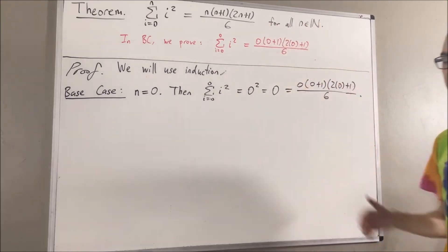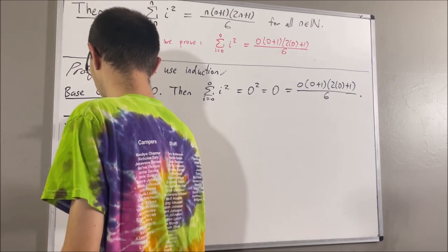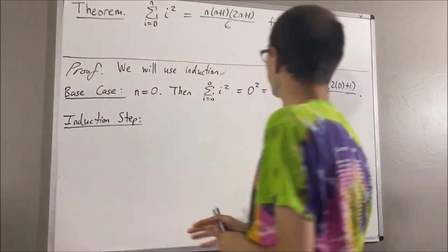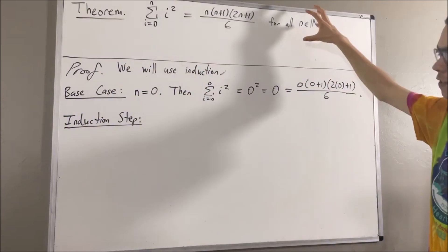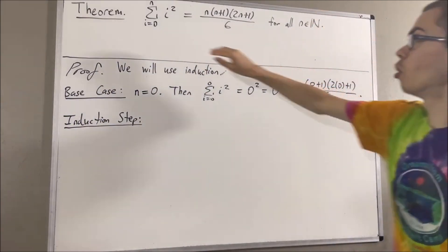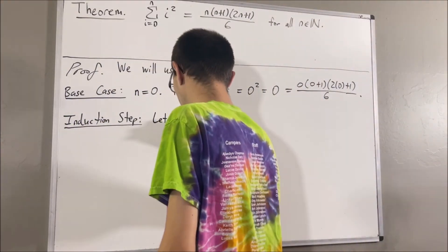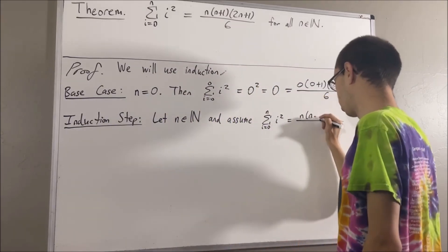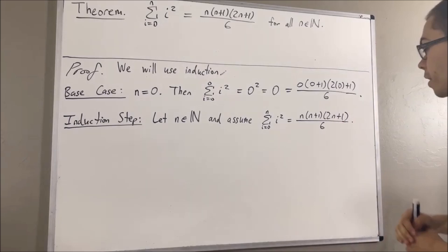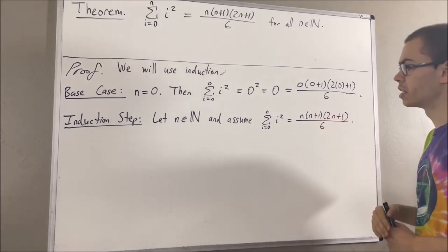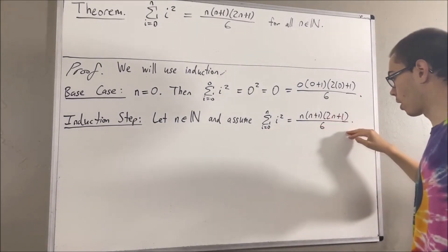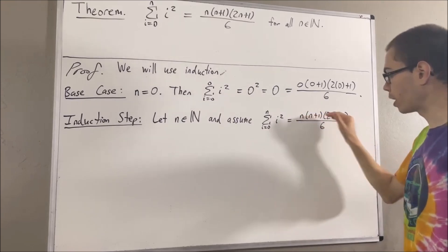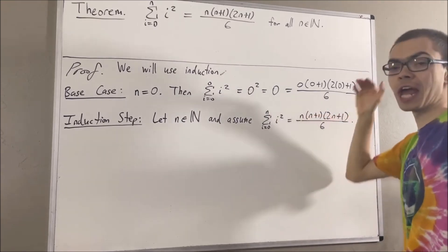So now let's move on to the induction step. Now in the induction step, we give ourselves an arbitrary natural number n where this is true. And the whole goal of the induction step at this point is to show that this is true, where instead of n, we replace everywhere we see an n with n plus one.